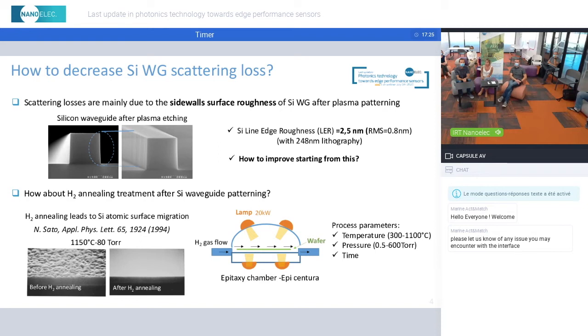The question is, how to improve this roughness? Twenty years ago, Sato et al. demonstrated that by applying a hydrogen annealing treatment, it was possible to completely smooth a silicon surface. So we have used this method and applied it to patterned silicon waveguides.